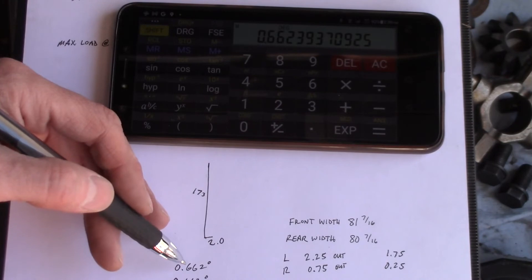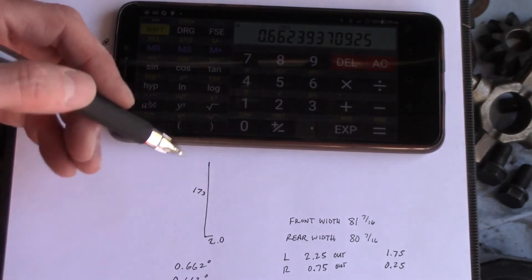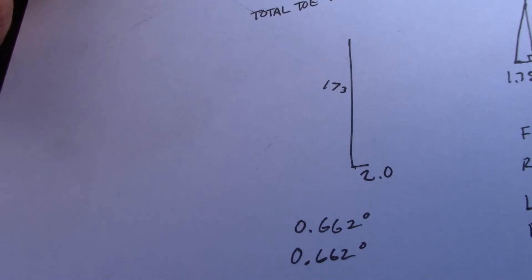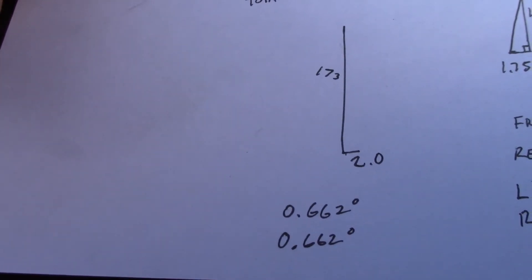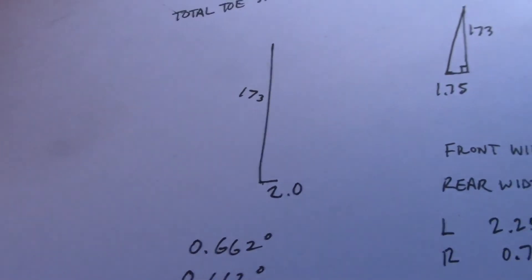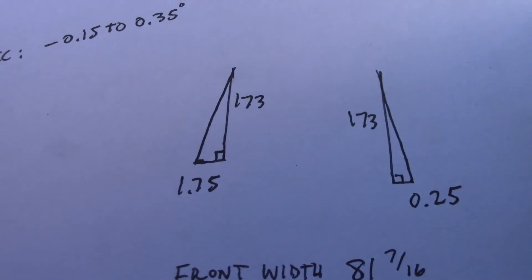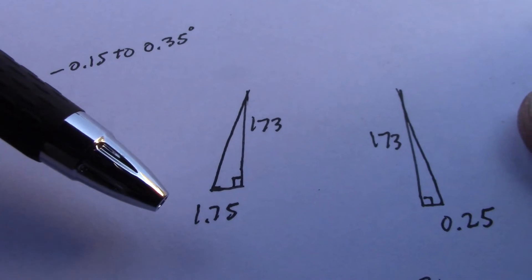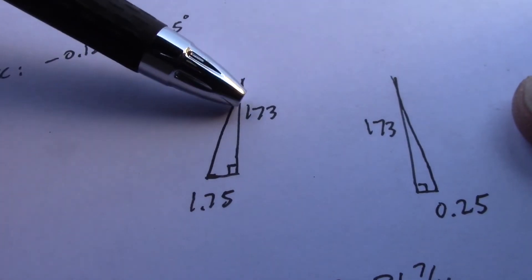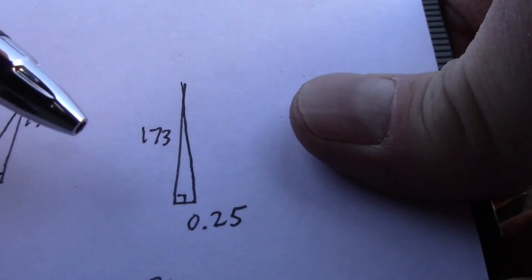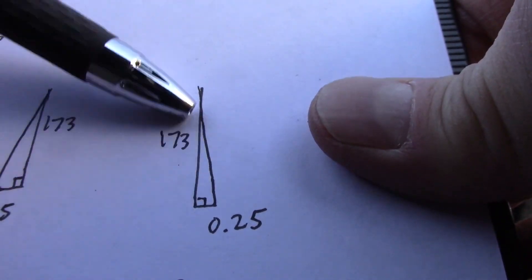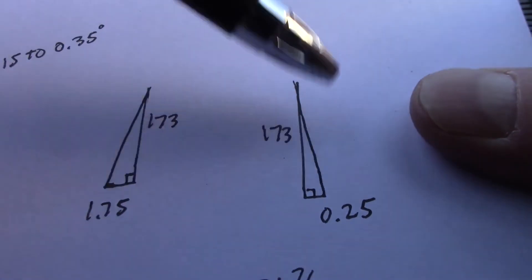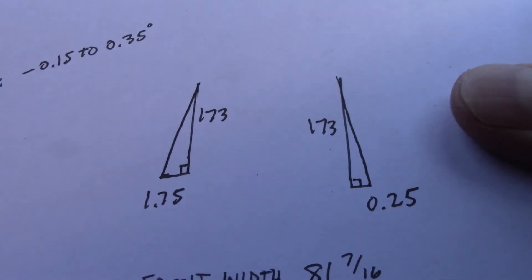So you're probably wondering why I wanted to calculate total toe angle and got 0.66 degrees and didn't really care so much about each individual wheel's angle. Yeah, I could have done that separately, but the reason I wanted total toe angle on this truck is because...